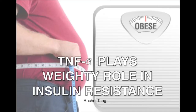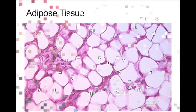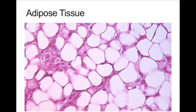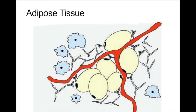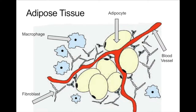The core of this issue can be best understood by first recognizing the role that adipose tissue, or body fat, plays in obese individuals. Adipose tissue consists mainly of adipocytes, which are cells specialized for the storage of fat. Fibroblasts, blood vessels, and macrophages can be found in adipose tissues as well.